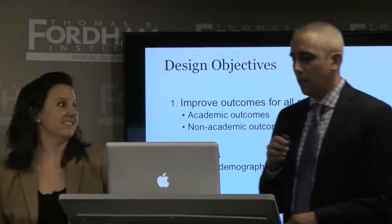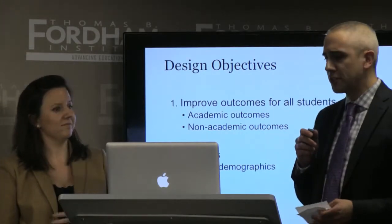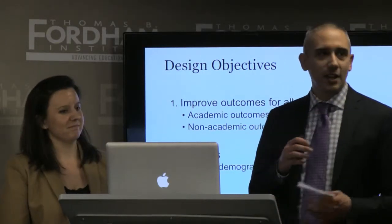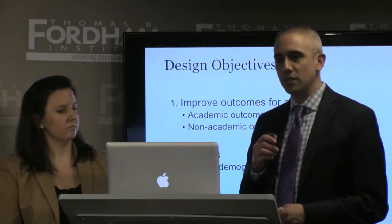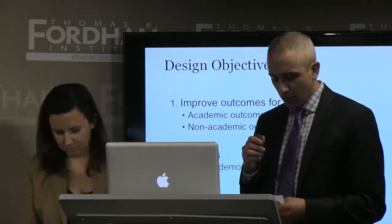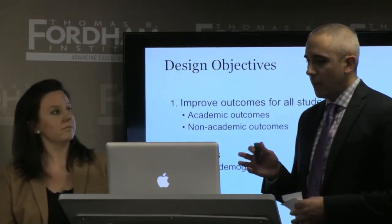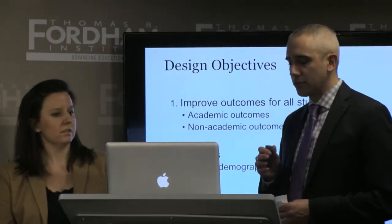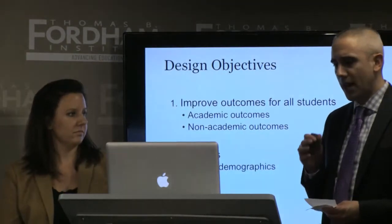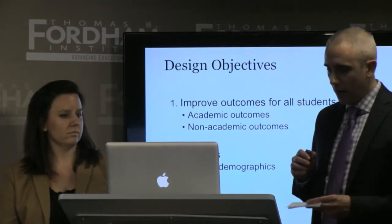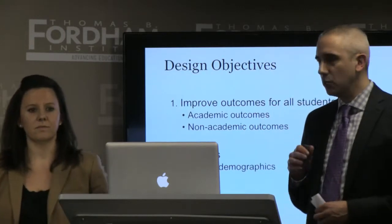Stephanie. We have two main objectives with this design. The first is to improve outcomes for all students, both academic and non-academic. Research has shown that consequential accountability systems have been successful in raising student achievement, so our proposal continues in that vein. But one of the criticisms of NCLB was that it focused almost exclusively on test scores and ignored other outcomes of schools that we know are important and that we value, so we included some non-academic outcomes. Our second objective is fairness — fairness to teachers and schools — so we try to avoid any measures that are correlated with student demographics.